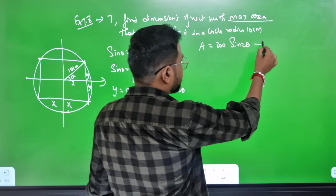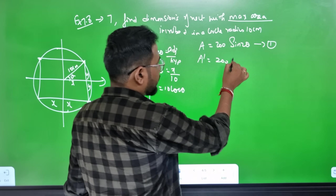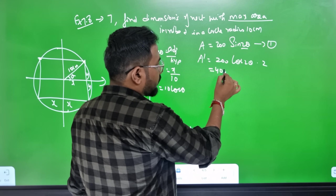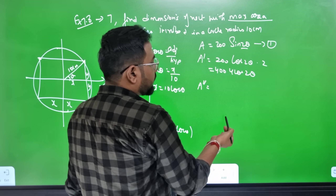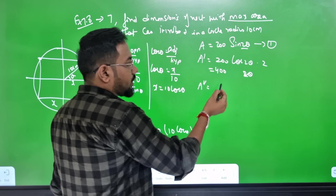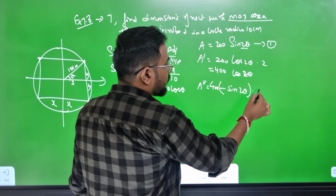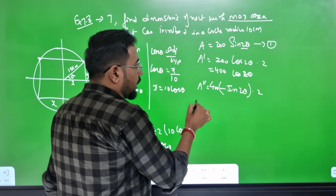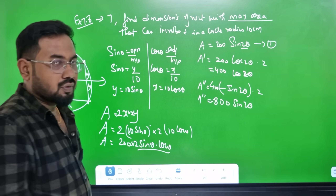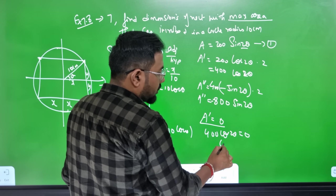This is the function A = 200sin2θ. Taking the first derivative: A' = 200 × cos2θ × 2 = 400cos2θ. Setting A' = 0: cos2θ = 0, so 2θ = π/2, giving θ = π/4 as the critical number.